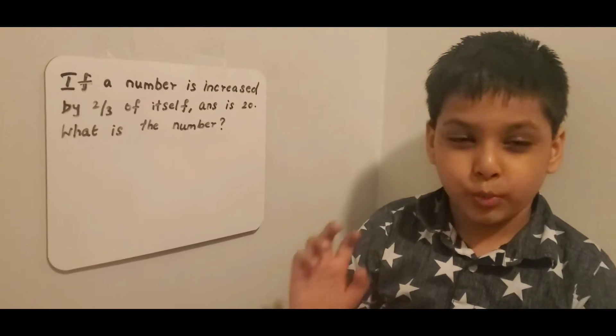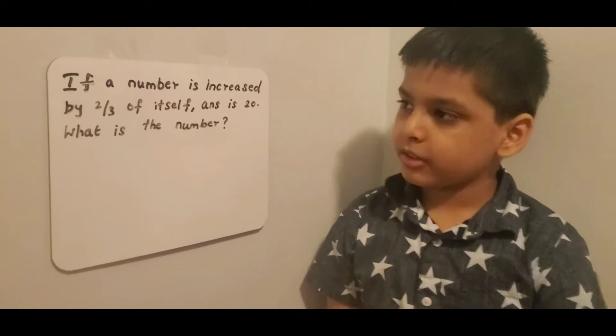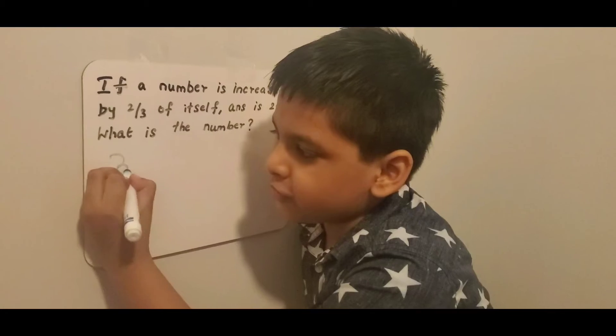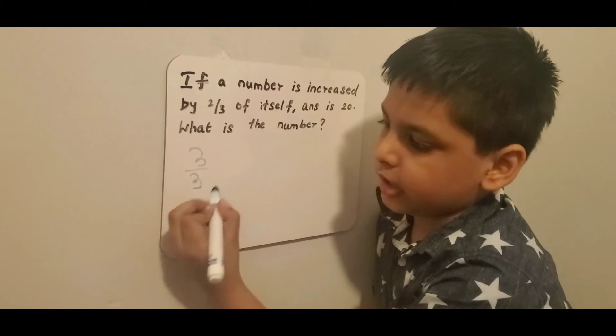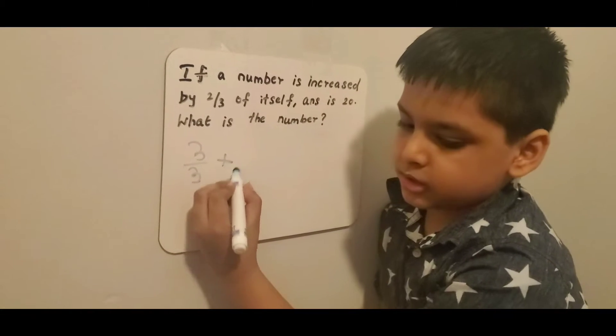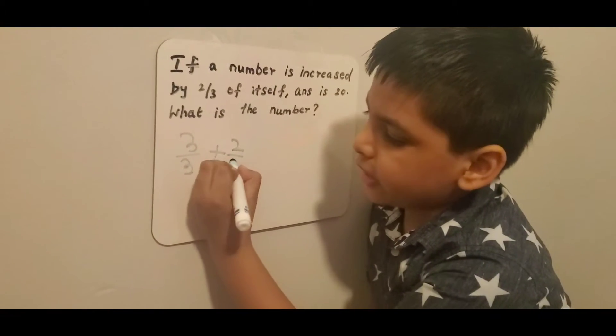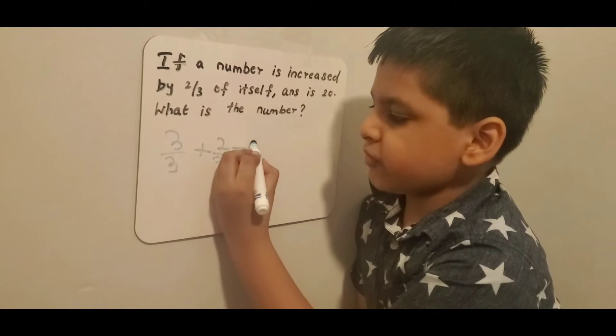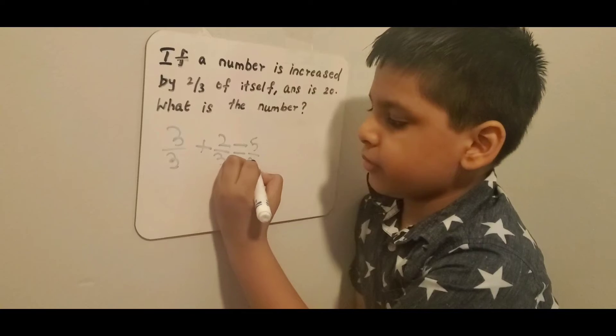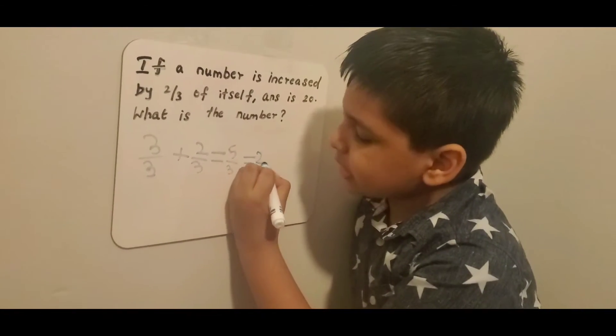Consider 3/3 is one part of that number. So we should do 3/3 plus 2/3, which equals 5/3. And 5/3 is also equal to 20.